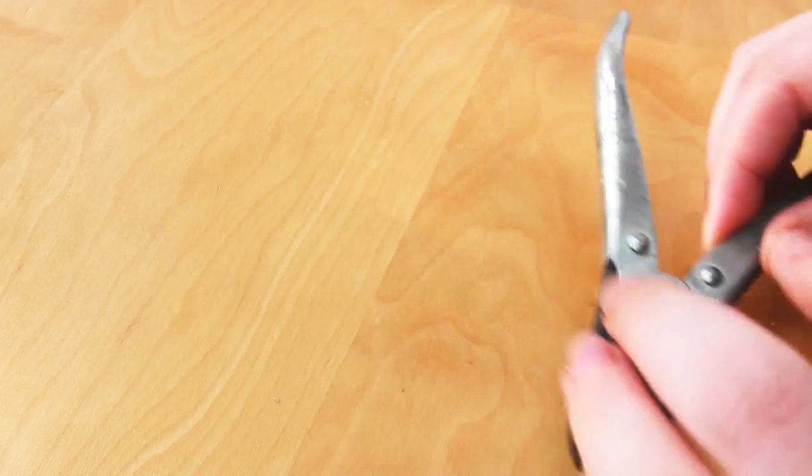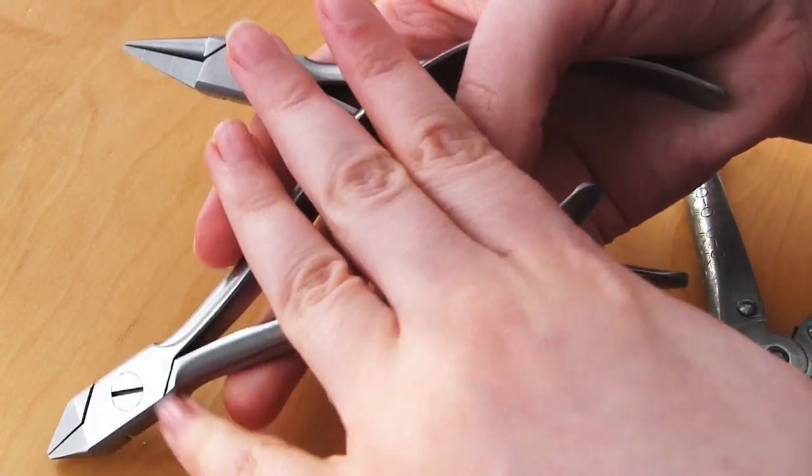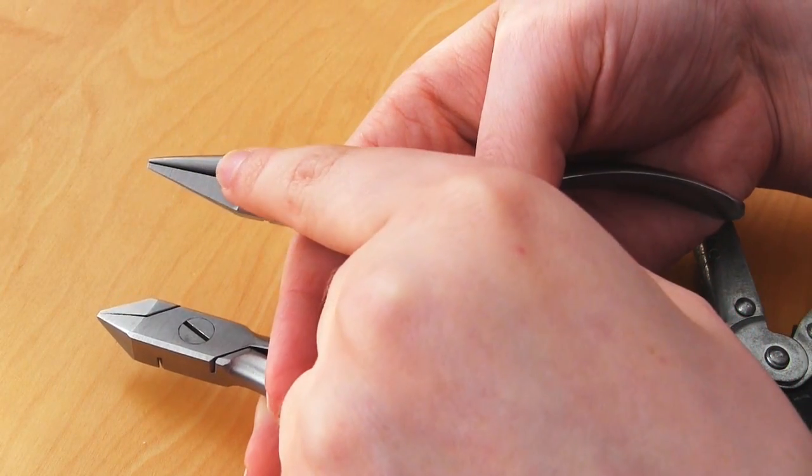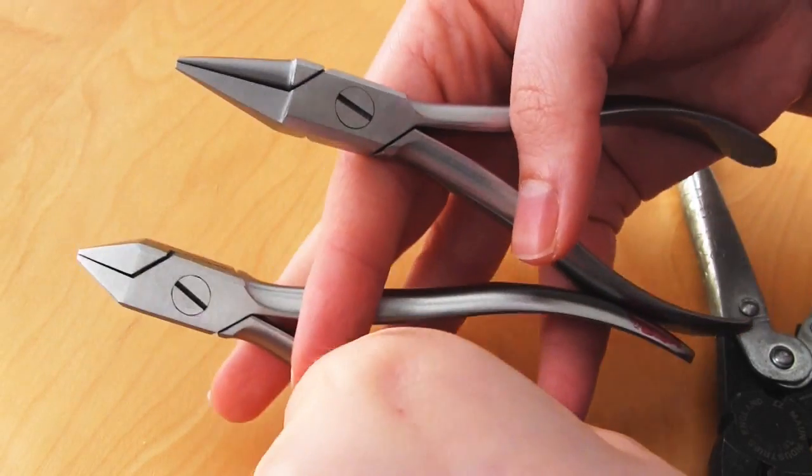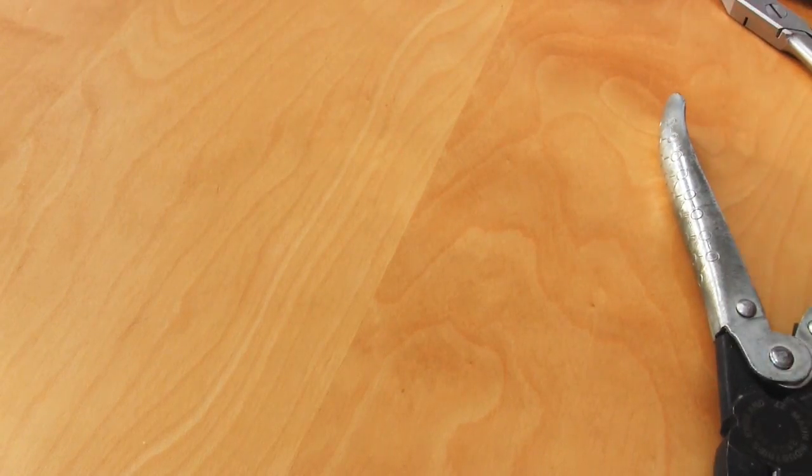You'll also need some pliers and some wire cutters. Obviously the wire cutters are to cut the wire and the pliers will be needed to shape the tree branches. It's best to use pliers that have a round nose at least on one side.